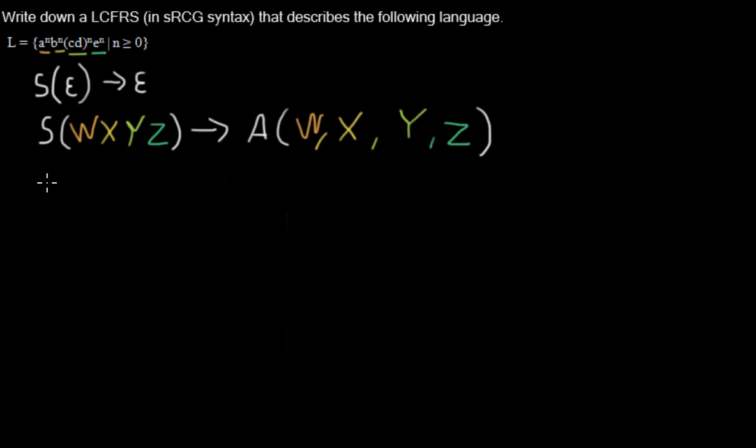Now I will start with the simplest rule where I will have A instantiated with four different strings that doesn't depend on any other rule. And I want them to be instantiated with an a in the first string, with the b in the second, c and d in the third, and e in the fourth.